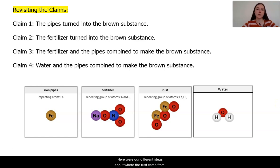Here were our different ideas about where the rust came from. Now from the evidence we collected in the digital model, we know that one substance can in fact turn into something else. We also know that two substances can have a chemical reaction and turn into something new as well. So how does this help us narrow down which claims are correct?